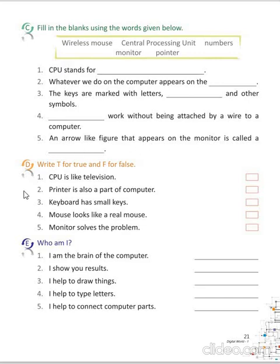Now, come to D. Here, you have to write T for true and F for false statements. CPU is like television — False. Printer is also a part of computer — True. Keyboard has small keys — True. Mouse looks like a real mouse — True. Monitor solves the problem — False.